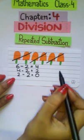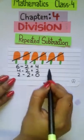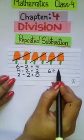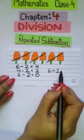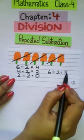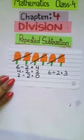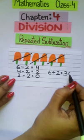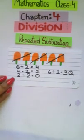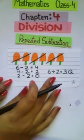So, we can also write it as 6 ice creams divided by 2 ice creams is equal to 3 groups. So, 3 being the quotient. This was an example of repeated subtraction.